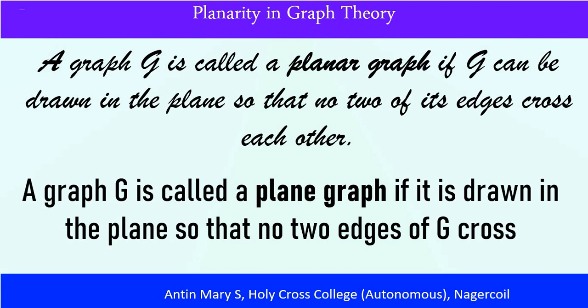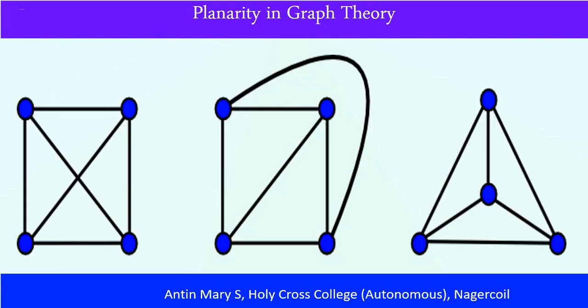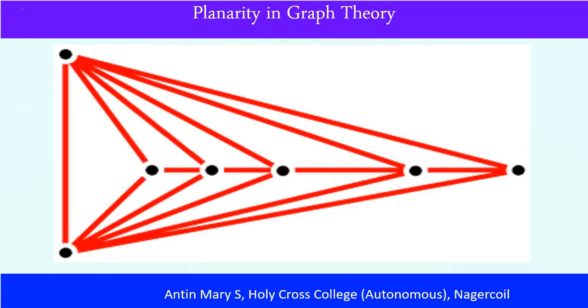A graph G is called a plane graph if it is drawn in the plane so that no two edges of G cross. Let's see what's the difference between planar graph and plane graph with some examples.